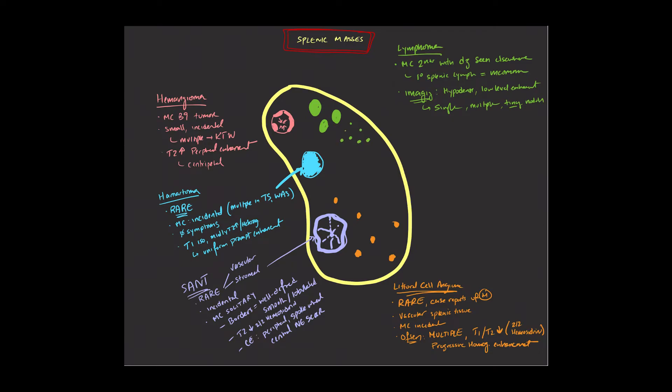And one of the more common imaging appearances is generalized splenomegaly. So generally, we think the spleen upper normal is about 13 centimeters in craniocaudal dimension, and that starts to enlarge in the context of known lymphoma. You've got to be worried about lymphomatous involvement of the spleen.